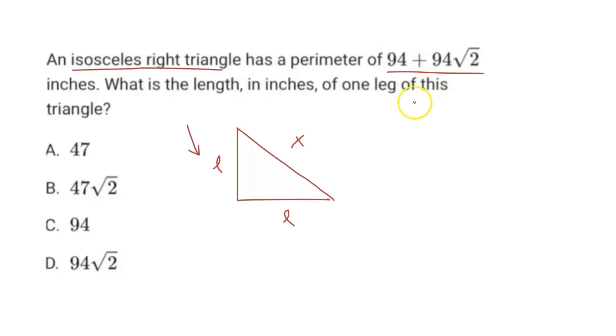So what we can do here is set up an equation where l plus l plus x must be equal to 94 plus 94 times square root 2. Okay, cool. So we have this expression set up.